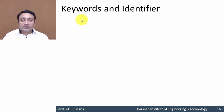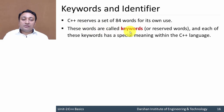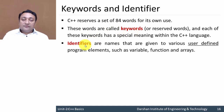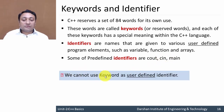Let us discuss each token in detail. In C++, there are 84 reserved keywords. These are English words and each word has a special meaning. Identifiers are names given to various user-defined program elements like variables, structures, functions, arrays, and namespaces. Some identifiers are predefined, like Cout, Cin, and main.